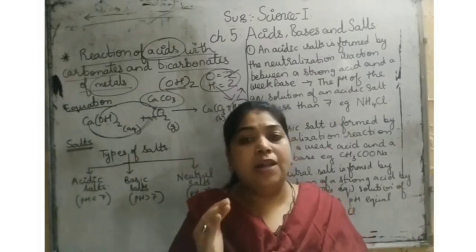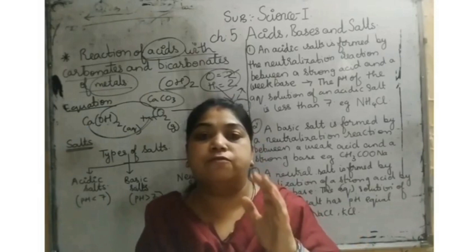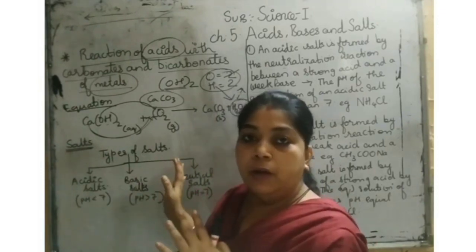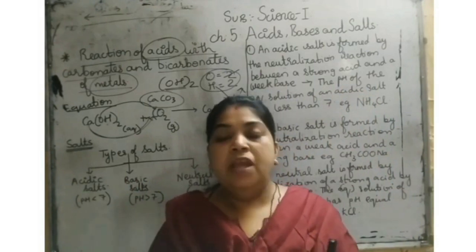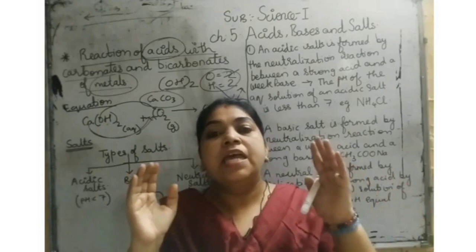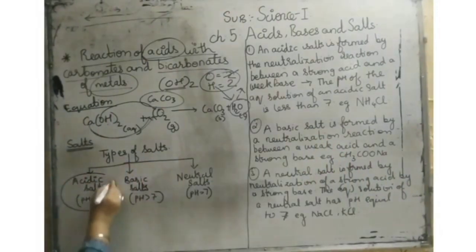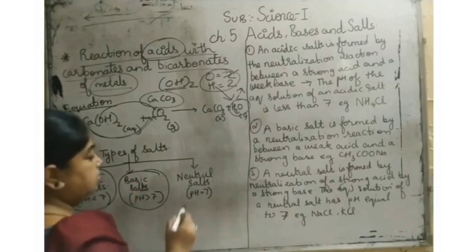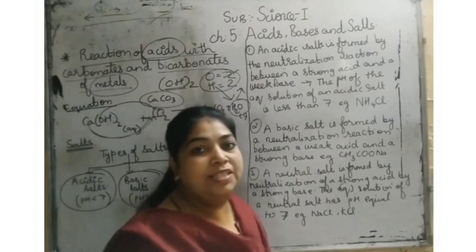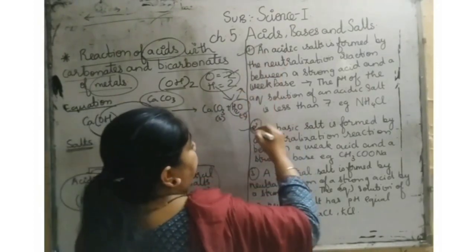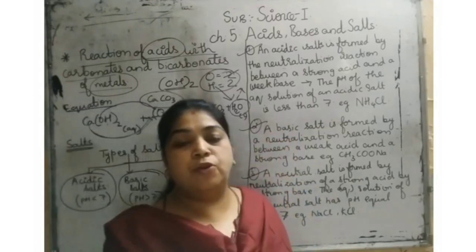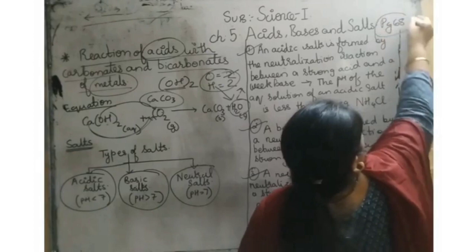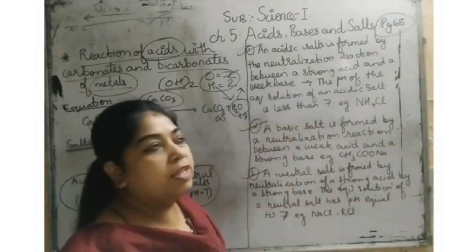Now we are going to learn about salts and types of salts. The theory is on page number 68, which I have noted down point-wise on the board. You can mark all these points in your textbook. There are three types: acidic salts where pH is always less than 7, basic salts where pH is always greater than 7, and neutral salts where pH is always equal to 7.